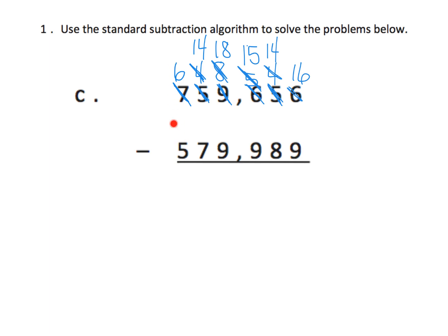And thankfully this is fine — six take away five is good. So I have 16 take away 9, that gives me 7 in the ones place. I have 14 tens take away 8 tens, that gives me 6 tens. I have 15 hundreds take away 9 hundreds, that gives me 6 hundreds. I have 18 thousands take away 9 thousands, that leaves me with 9 thousands.